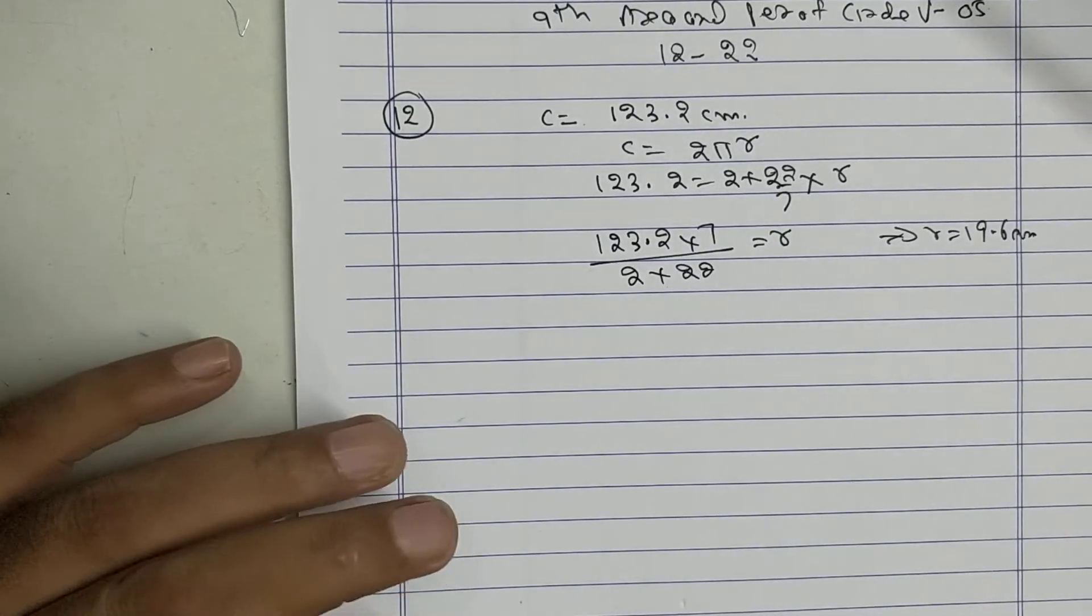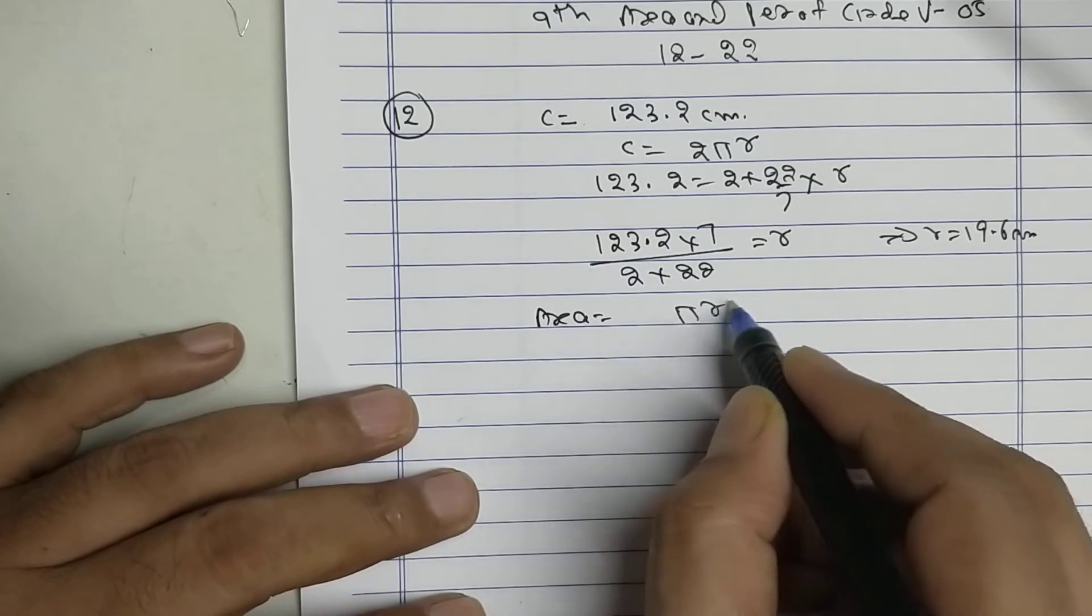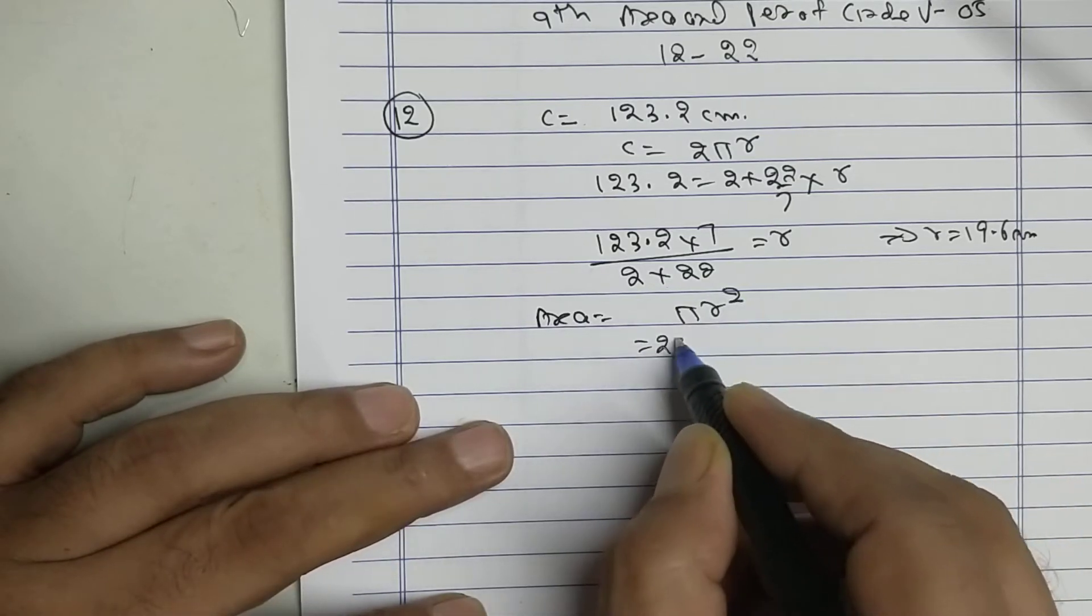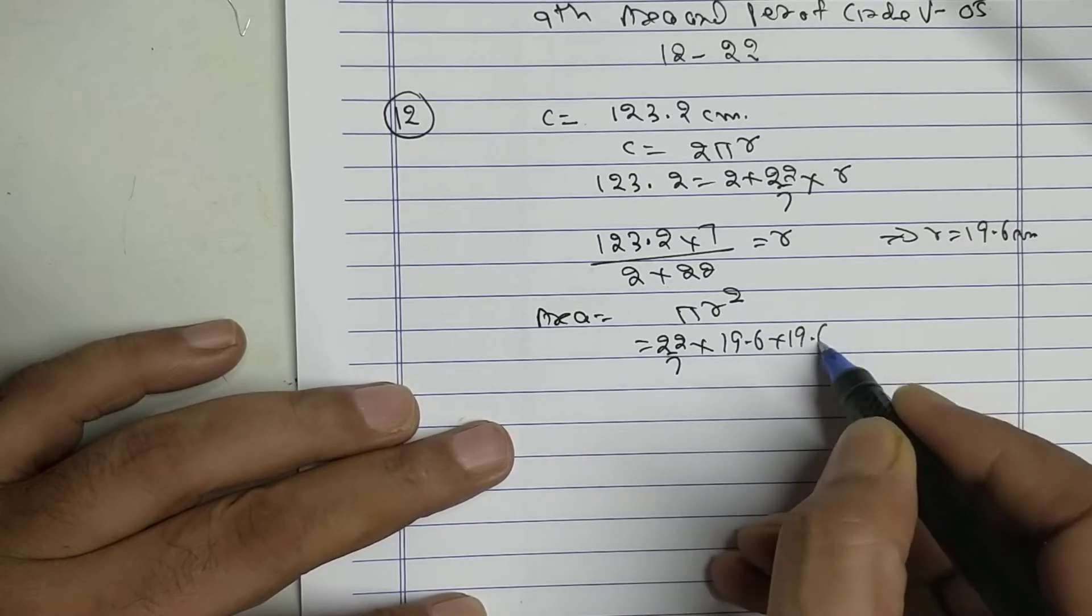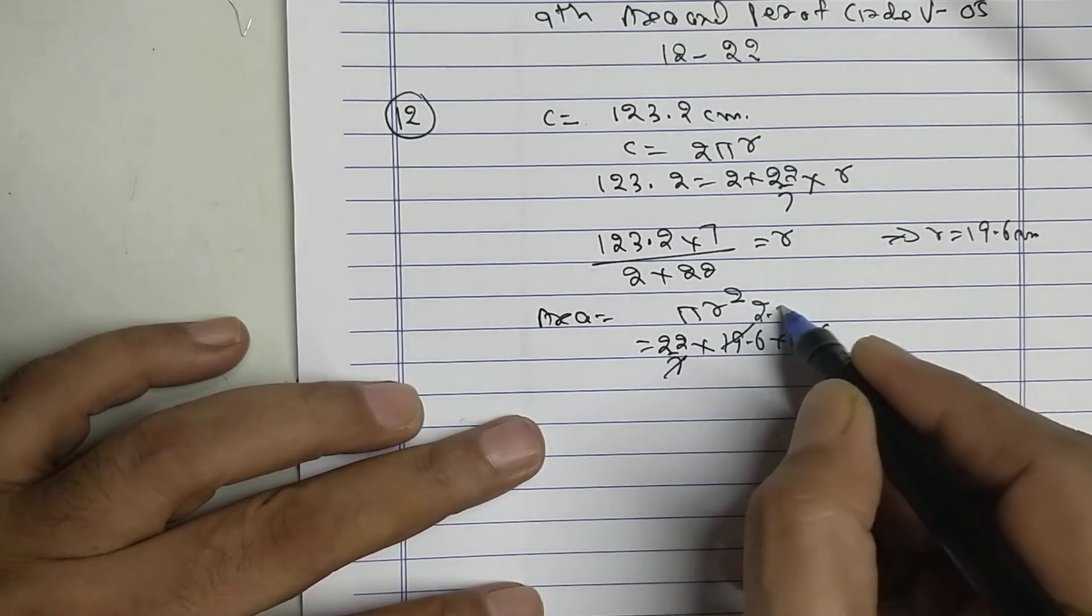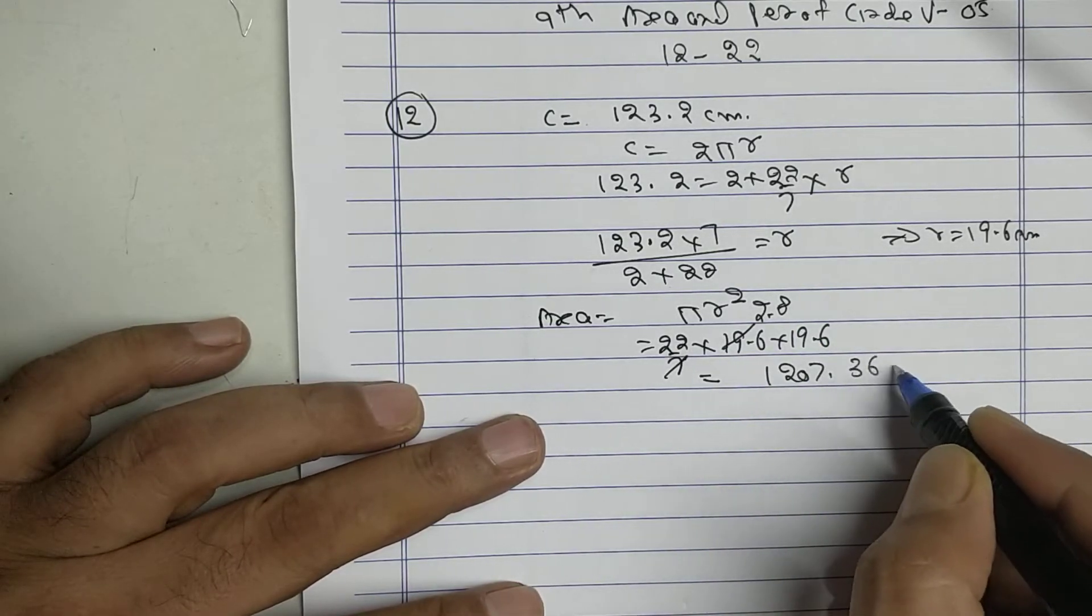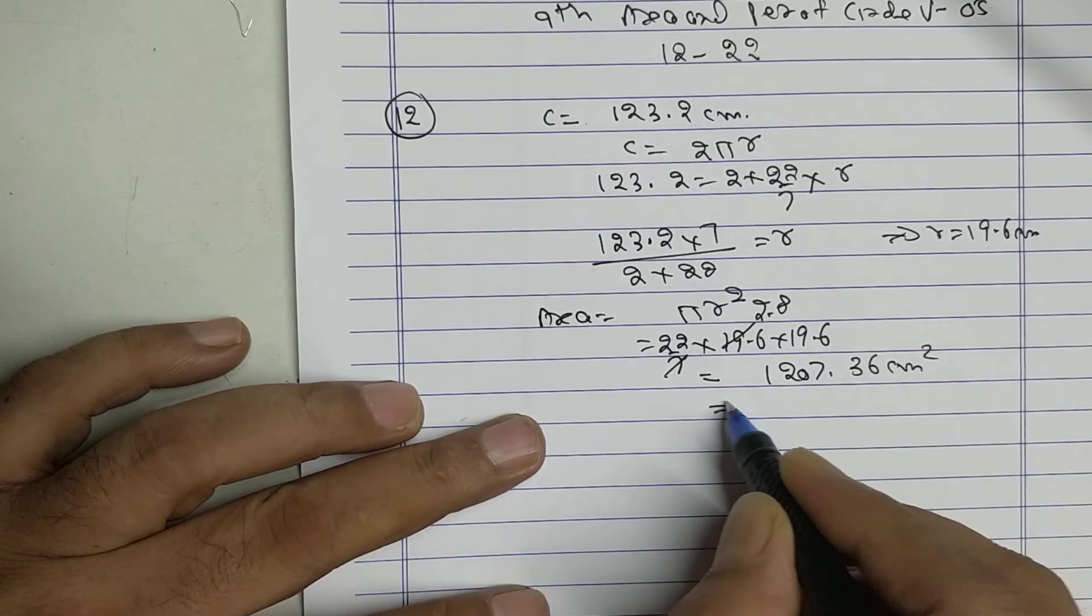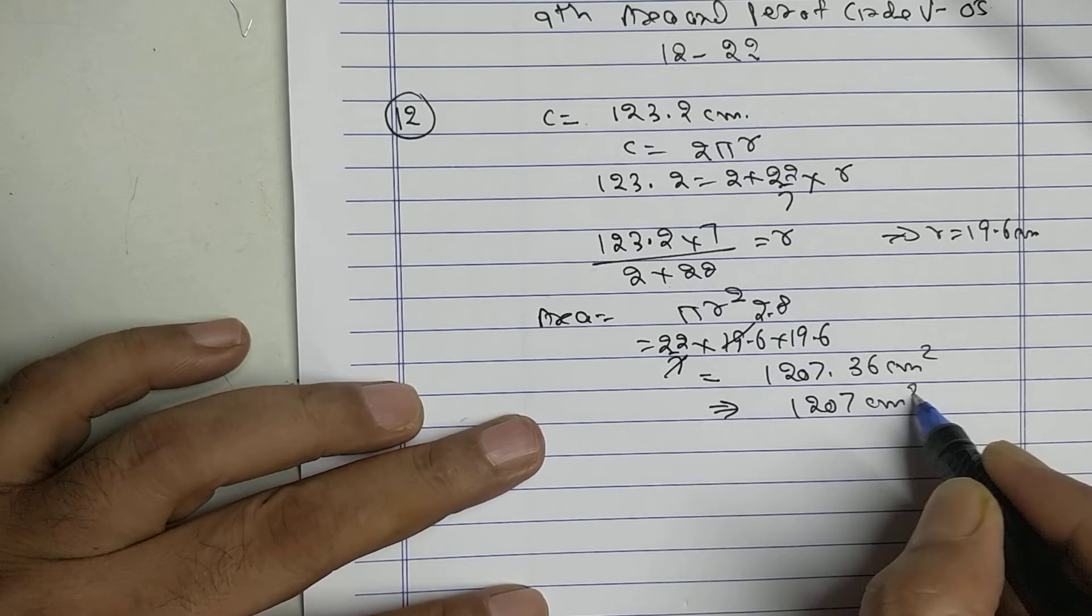Find the area: πr². 22 upon 7, 19.6 into 19.6, that equals 1207.36 cm². So area in centimeters is 1207 cm².